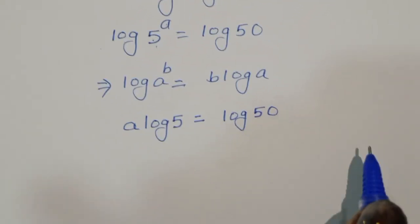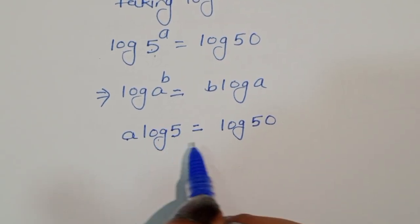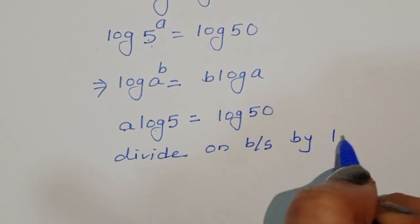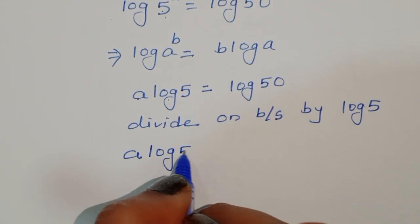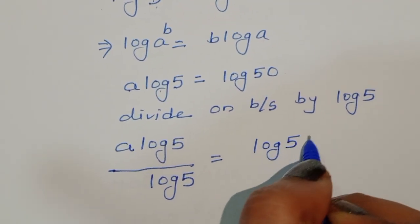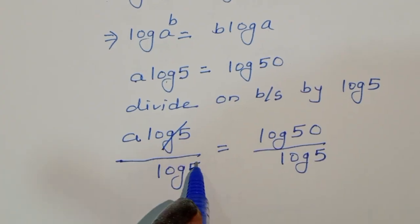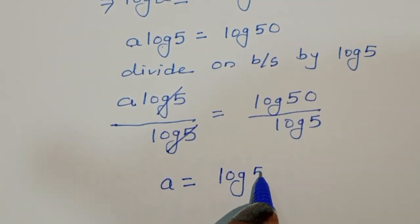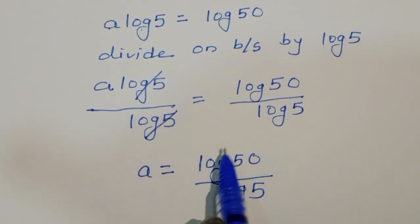Now we have to find the value of a, so we divide both sides by log of 5 to cancel it. So a times log of 5 divided by log of 5 equals log of 50 divided by log of 5. Therefore a is equal to log of 50 divided by log of 5.